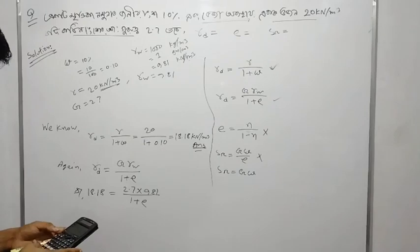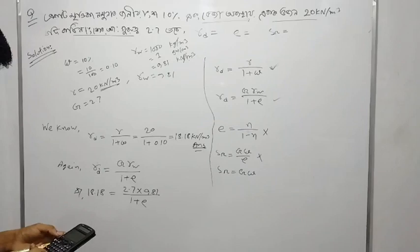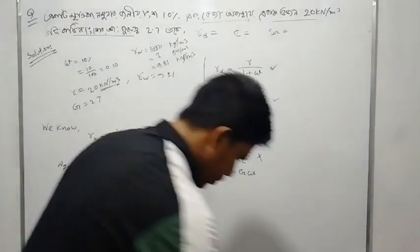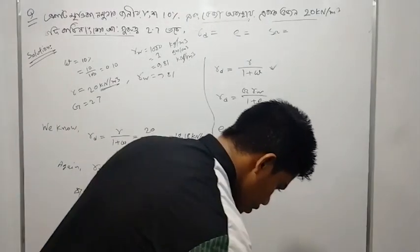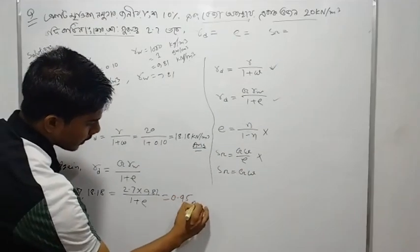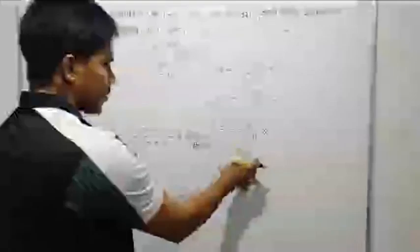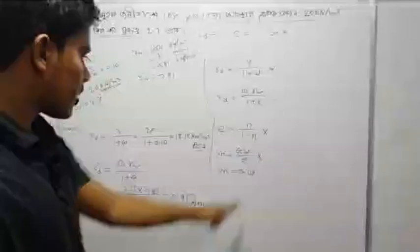2.7 divided by (1 plus ...) equals 0.001 — let's proceed with the shift calculation. Result: approximately 2.